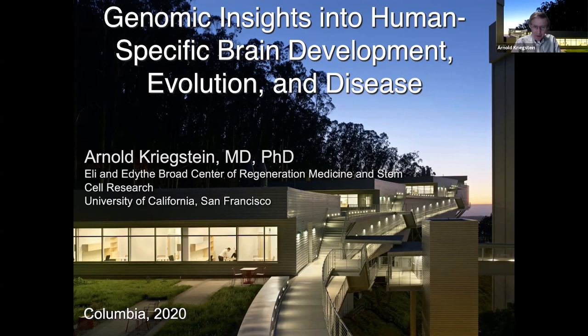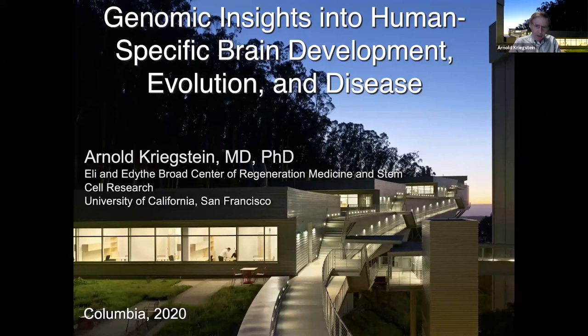It's a real pleasure and treat for me to be here virtually, quite delayed from my original intention last March. But it's wonderful to be back at Columbia. The talk I want to present has to do with work we've done in the last five or six years, focusing largely on cortical development in the human brain, comparing it to other model systems, and using that as a way of gaining insights into disease.